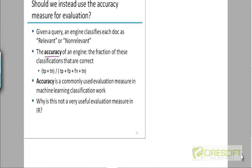The instructor responds: accuracy won't work because for most queries, the true negatives are going to be extremely high. It all boils down to the most frequent queries, and for those, accuracy is always going to be high regardless of whether you return no results or only relevant results — the difference is just a few hundred, thousand, or even a million documents, which is still a very small fraction of the total corpus.